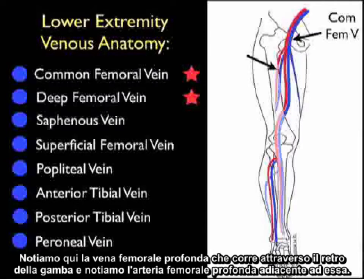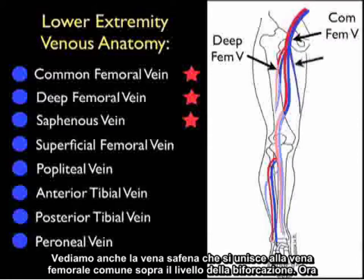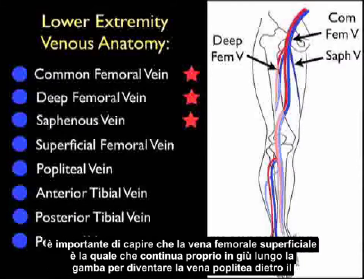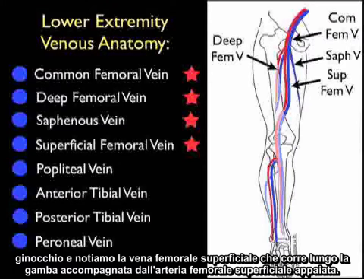We note here the deep femoral vein coursing to the back of the leg and the adjacent deep femoral artery. We also see here the saphenous vein which joins into the common femoral vein above the level of bifurcation. It's important to realize that the superficial femoral vein is the vein that actually continues down the leg to become the popliteal vein behind the knee, accompanied by the paired superficial femoral artery.